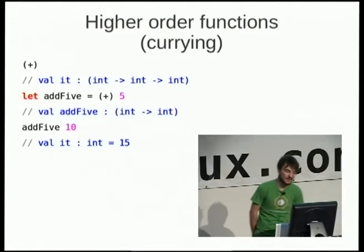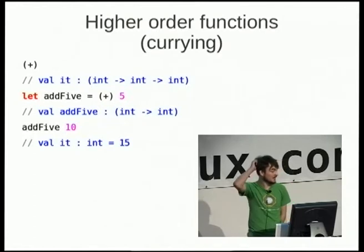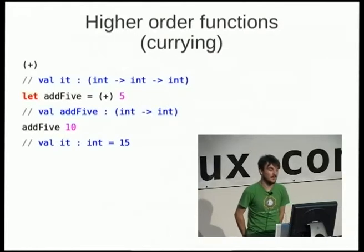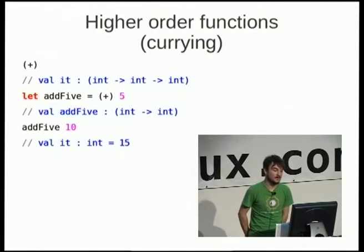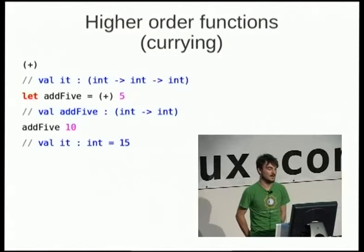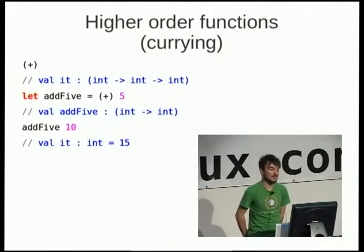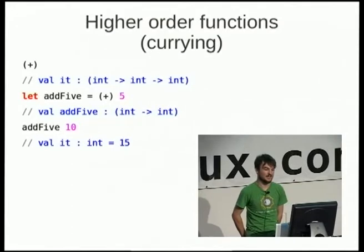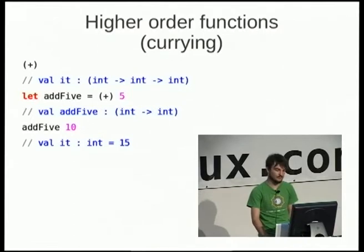Higher order functions are a big thing in functional programming. We've got a plus function — an operator — that takes an int, an int, and returns an int. We can curry that and say the first parameter is five, and assign that to another function. So addFive takes a single parameter now and gives you back an int. AddFive applied to ten gives you back fifteen. It's a way of reducing the number of parameters something takes and binding them to a name.